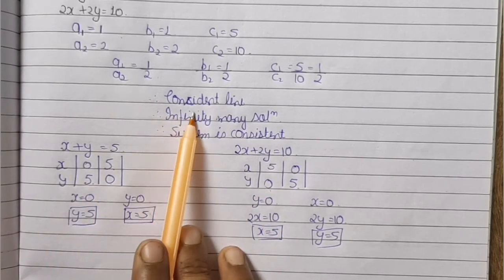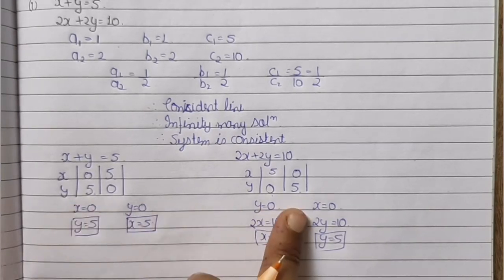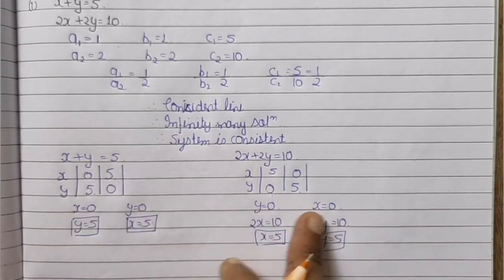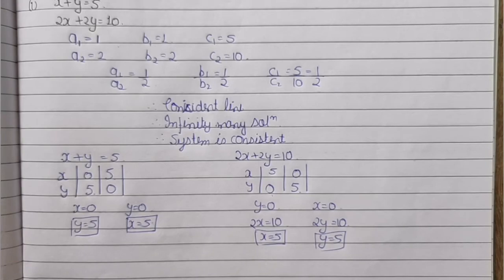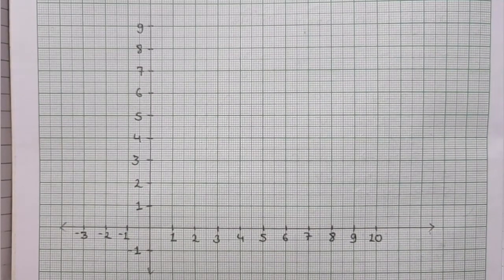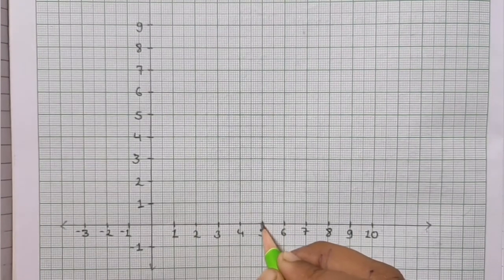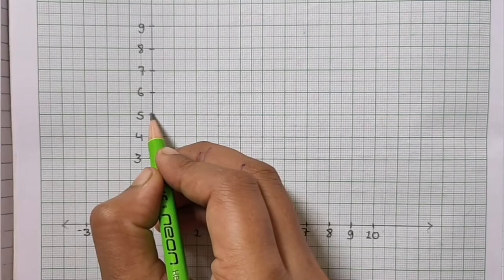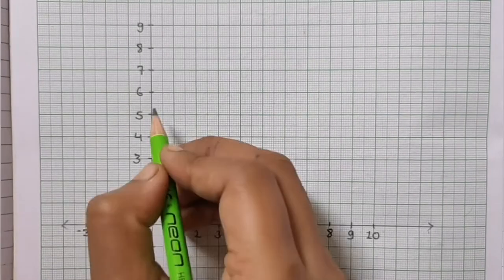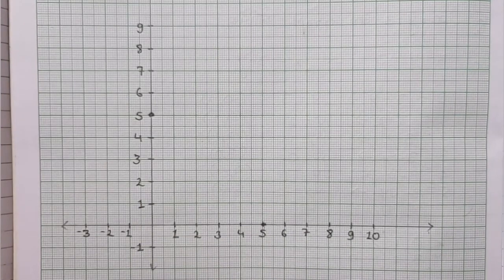Both equations give the same solution points (0,5) and (5,0) because this is a coincident line — the two equations coincide or overlap. So graphically we find the solution.